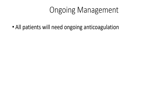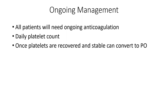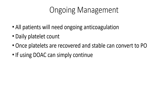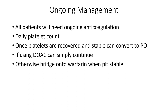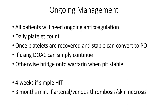For ongoing management, once you've switched treatment, all patients will need to be anticoagulated. Monitor the platelet count daily, and once the platelets have recovered back to a normal level and are stable — give it a couple of days — you can then consider switching to an oral alternative. If you started on DOACs, simply continue that. Otherwise, bridge onto warfarin for a few days depending on what drug you've started with — again, that's all in the guidelines. Duration of ongoing anticoagulation is four weeks if it's simple HIT with no complications, just a drop in platelets. If there have been any more severe problems — arterial or venous thrombosis or skin problems — it's three months minimum. They will also need follow-up in haematology.